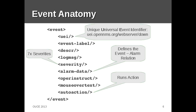An event is defined as XML. We have different tags: a UEI that should be unique, an event label, description, log message, severity, alarm data, operator instruction, mouse-over text, and very interestingly, auto action — so that we can run scripts stored locally on the OpenNMS server.